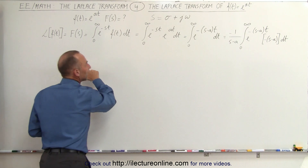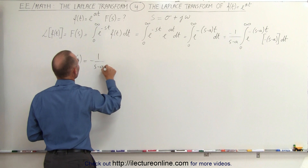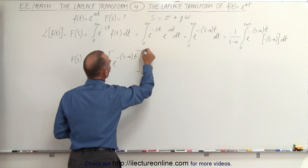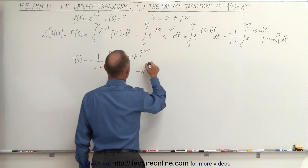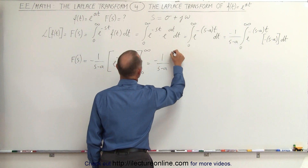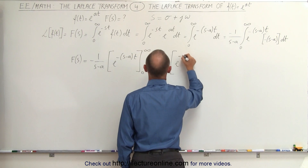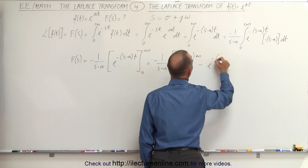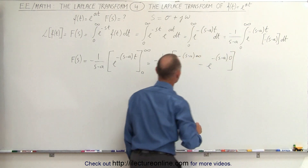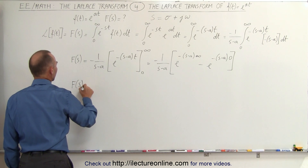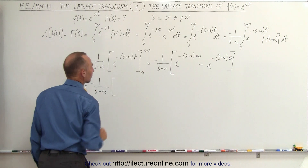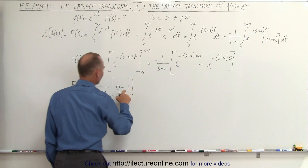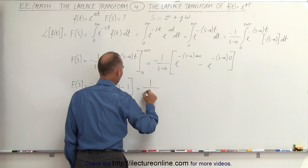The Laplace transform is equal to minus 1 over s minus a times e to the minus s minus a times t, evaluated from 0 to infinity. When I first plug in infinity, I get minus 1 over s minus a times e to the minus s minus a times infinity, which equals 0. Minus e to the minus s minus a times 0, and that will be equal to 1. So this negative will negate that negative.